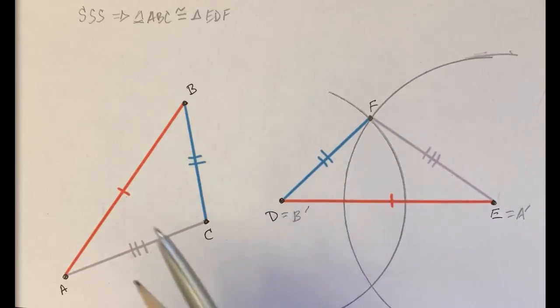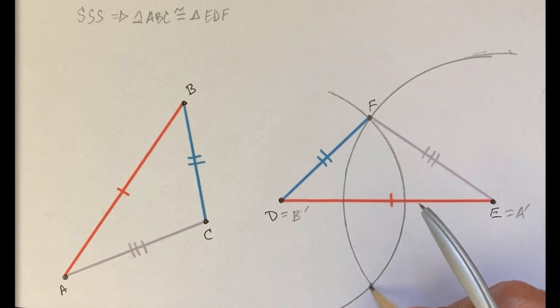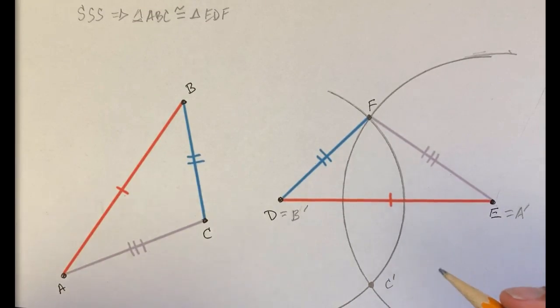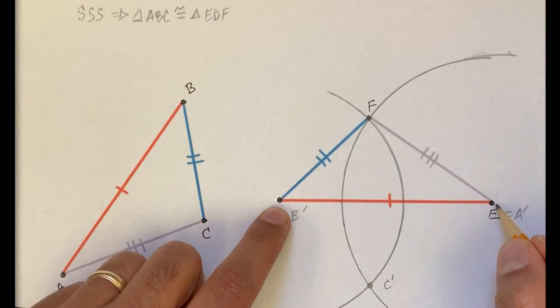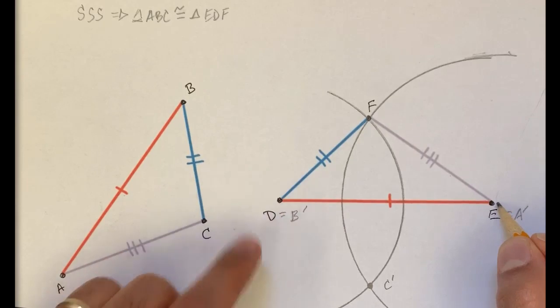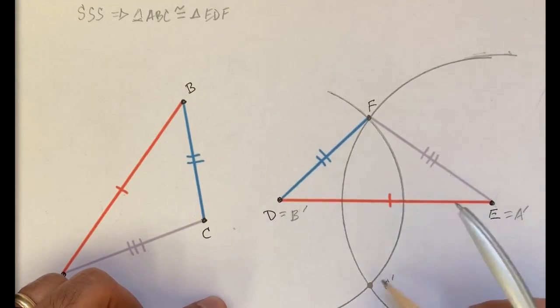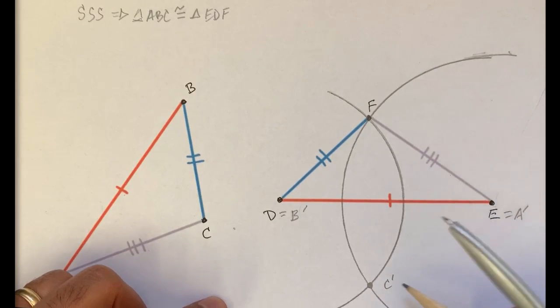Now, another possibility is when we do that transformation, C prime ends up right over here. So what could we then do to continue to transform rigidly so that C prime ends up with F? Remember, the other two points have already coincided with E and D. So we just have to get C prime to coincide with F.